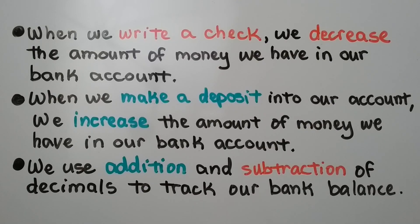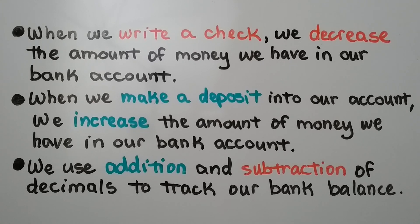When we write a check, we decrease the amount of money we have in our bank account. When we make a deposit into our account, we increase the amount of money we have in our bank account. We use addition and subtraction of decimals to track our bank balance.